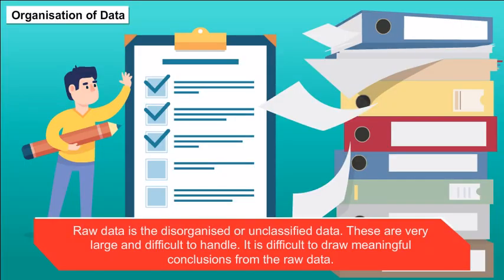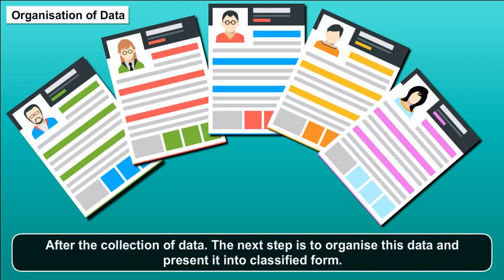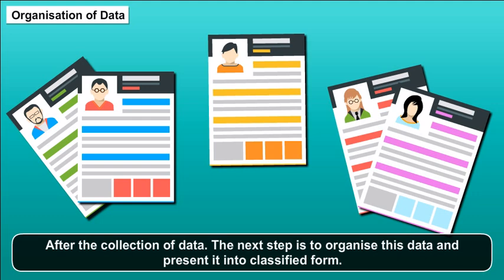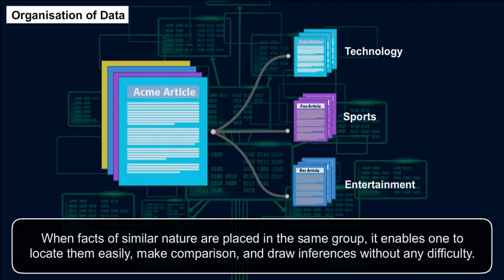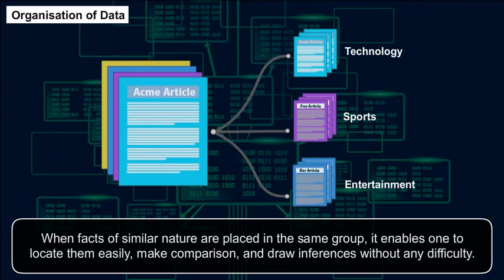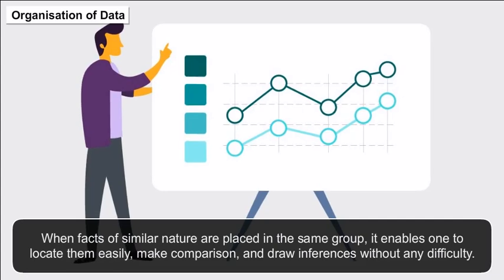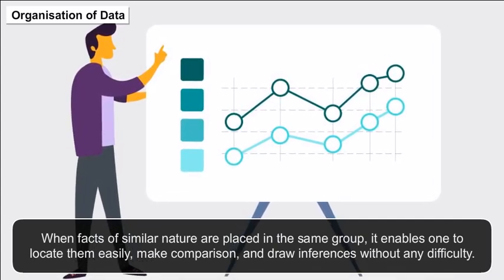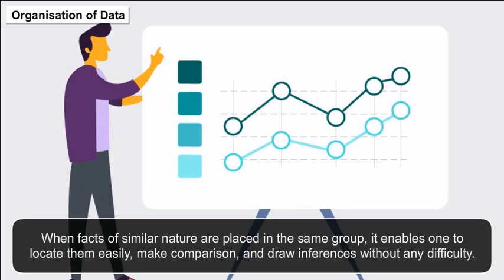What is raw data? Raw data is the disorganized or unclassified data. These are very large and difficult to handle, and it is difficult to draw meaningful conclusions from raw data. After the collection of data, the next step is to organize and present it in classified form. When facts of similar nature are placed in the same group, it enables one to locate them easily, make comparisons, and draw inferences without difficulty.